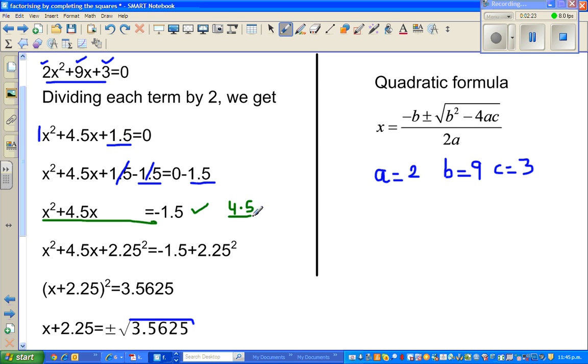You take half of 4.5, so you divide 4.5 by 2, which is 2.25. If I put 2.25² here, this will become a perfect square. That is the feature of a perfect square.